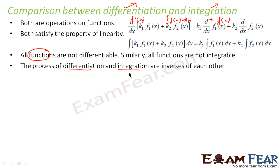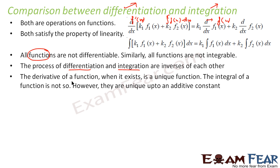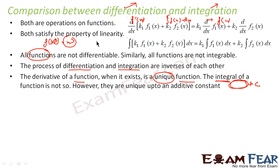The derivative of a function, when it exists, is a unique function. If you have a function and want to find its derivative, you get exactly one result. However, the integral of a function is not unique — it is unique only up to an additive constant. For example, if f(x) = x³ and you find the derivative, you get 3x², which is unique. But if you have 3x² and want to find its integral, you get x³ plus some constant.